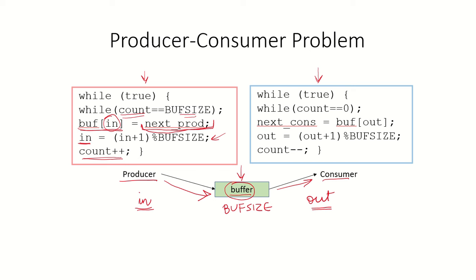Now let's look at the consumer process. While count equals 0, the consumer does nothing, since no items are available in the buffer. Otherwise, the consumer takes out information from the buffer at the out pointer into the variable next_consumed, increments out by 1, and decrements count by 1 because the consumer has consumed one item from the buffer.